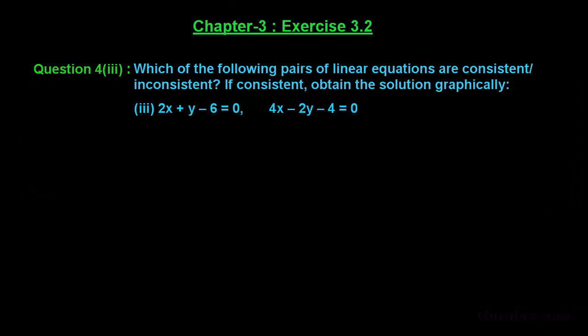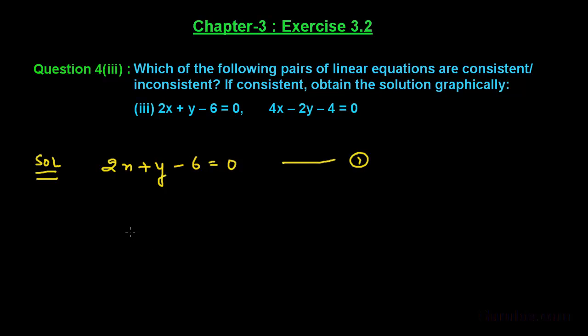Let us solve the third part of question number 4 of exercise 3.2 of chapter 3. The question asks which of the following pairs of linear equations are consistent and inconsistent, and if consistent, to obtain the solution graphically. We are given equation 1: 2x + y − 6 = 0, and equation 2: 4x − 2y − 4 = 0.